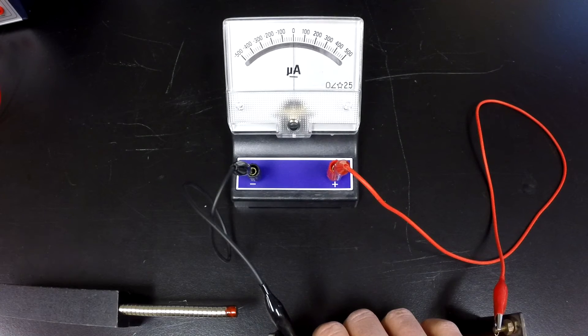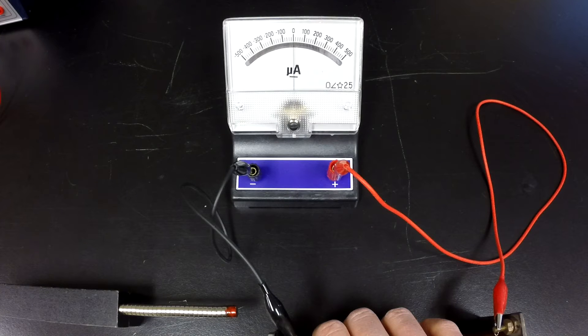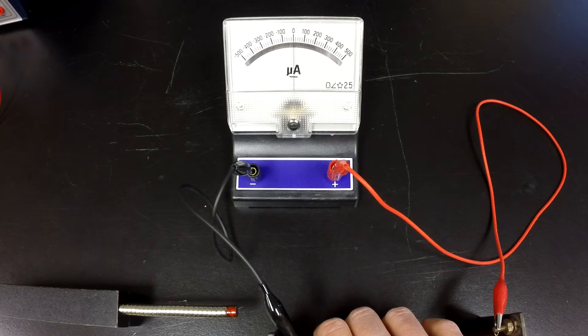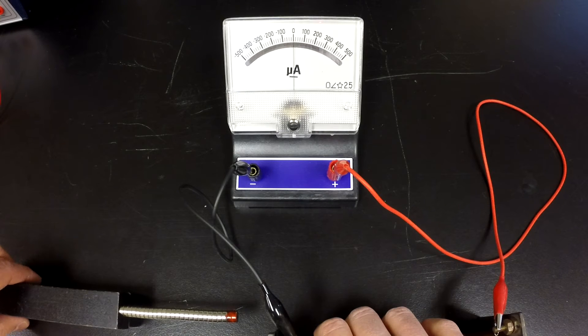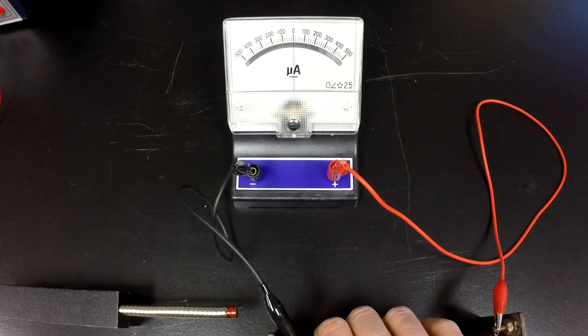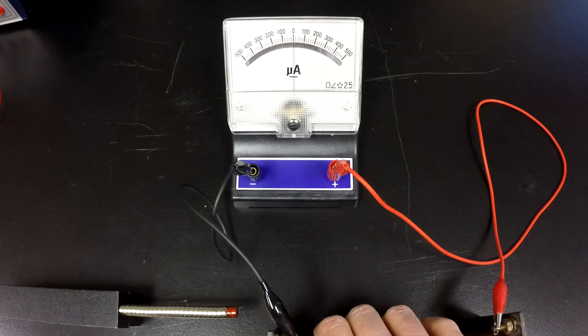You can see that the needle swung one way and then the other. As the coil is moving into the field, it induced a current. And as it left the field, it induced another current in the opposite direction. Now I'm going to keep the magnet where it's at. And now I'm going to move the coil wire up. So it's going to go into the magnetic field and then go back out of the magnetic field.